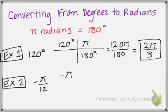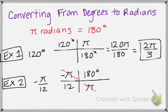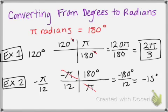Now if I'm given anything in radians, like negative pi over 12, when I'm doing problems I always convert it to degrees — I think it's easier to work with. So I have radians on top, so I need radians on the bottom to cancel it out. Pi is equal to 180 degrees. If you multiply straight across, your pi's will cancel out. So I have negative 180 degrees divided by 12, which is negative 15 degrees.